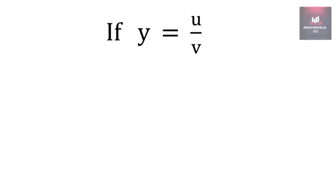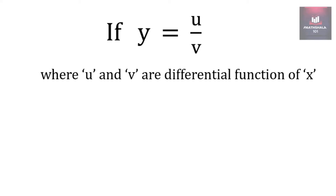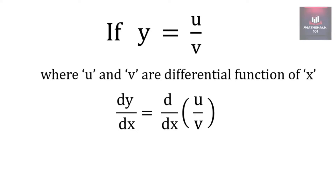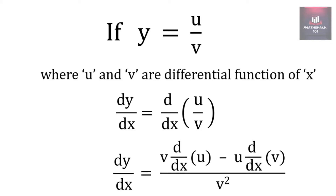Suppose y is equal to u divided by v, where u and v are differentiable functions of x. Then the derivative of y with respect to x — that is, d/dx of u upon v — will become v times the derivative of u with respect to x, minus u times the derivative of v with respect to x, all upon v square.